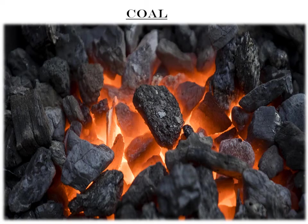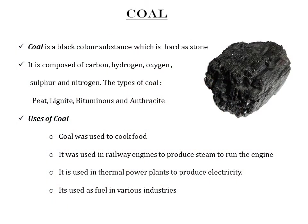The first section of this chapter mainly deals with coal. Here we will see what is coal, what are the uses of coal, the different forms of coal and how is coal formed. Coal is a black color substance which is hard as stone — it is a sedimentary rock that burns. It is mainly composed of carbon, and also constitutes hydrogen, oxygen, sulfur and nitrogen. The types of coal are peat, lignite, bituminous and anthracite.